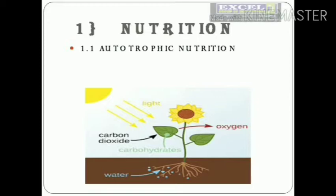Heterotrophs depend on autotrophs directly or indirectly for their food requirements. Autotrophs use photosynthesis as a simple process to synthesize food.